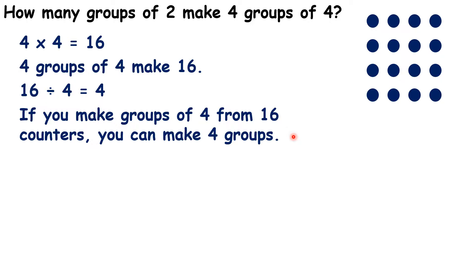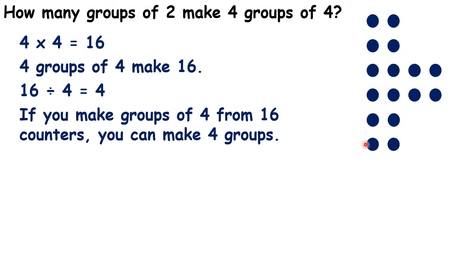But we haven't answered the question yet, because we need to know how many groups of two we can make from four groups of four. So, how many groups of two can we make from 16? Well, let's move our counters around so that instead of putting them in groups of four, we have two counters next to each other. So we have our counters in groups of two.